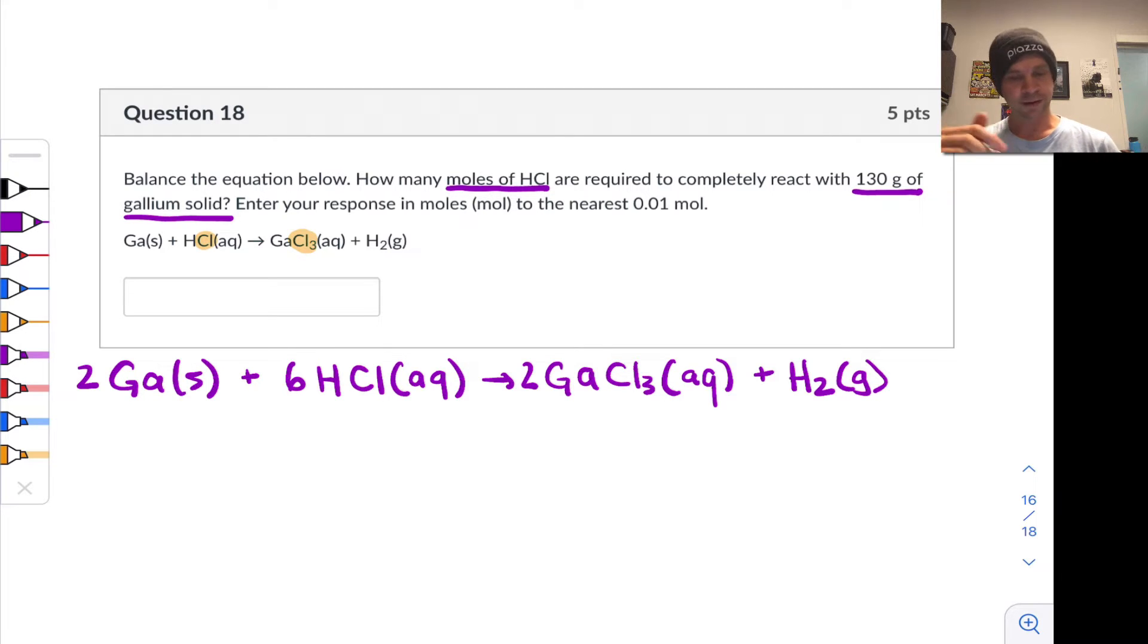And now, rather than doubling H2 to get the right number of H's on the product side, this is going to need to be a 3, 3 H2's in the balanced equation here. And I believe this will balance it. We've got 2 galliums, 6 hydrogens, and 6 chlorines on both sides. All right.